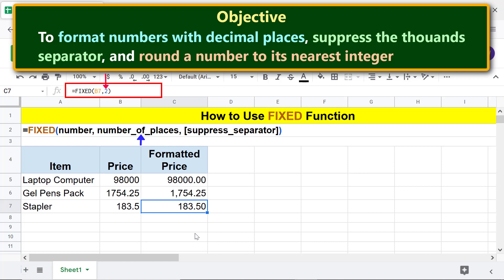Change this value to 0. Press Enter. FIXED has rounded the number to its nearest integer.